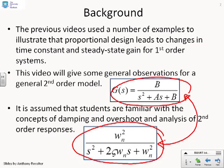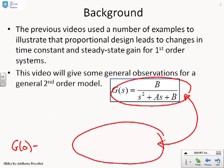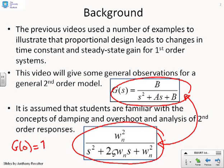A final note: you will see that we've deliberately chosen the steady-state gain of G to be 1, just because it makes results easier. You can, of course, use a different steady-state gain if you want, and the same principles will follow.